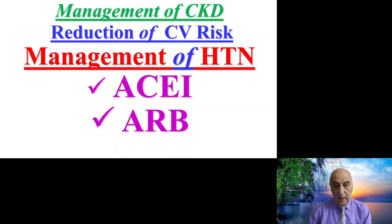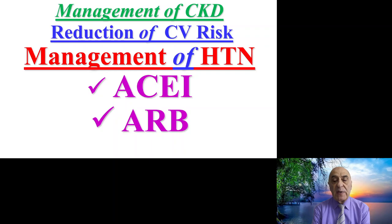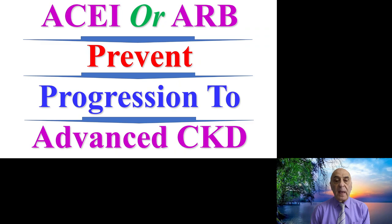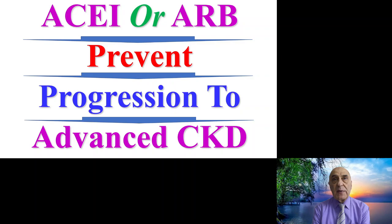For patients who have hypertension and chronic kidney disease, we can manage the hypertension with an angiotensin converting enzyme inhibitor — for example, ramipril — or with an angiotensin receptor blocker — for example, candesartan. Whether we use an ACE inhibitor or an angiotensin receptor blocker, this is expected to prevent the progression of CKD to an advanced stage.